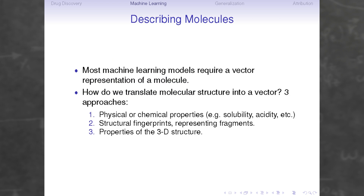The first step in any machine learning approach is generally to create a representation of your data. In this case, the data we're working with are molecules that are active for a particular protein. Pretty much every standard machine learning model uses a vector representation. The traditional approach is to use physical or chemical properties like solubility or acidity and run simple models on them. This works very well for small families of closely related molecules, but works less well when dealing with all of chemical space, because you can't describe most of it with a small number of properties.